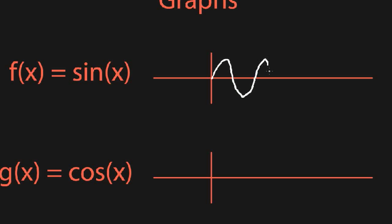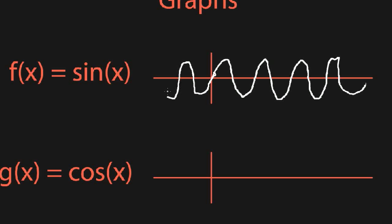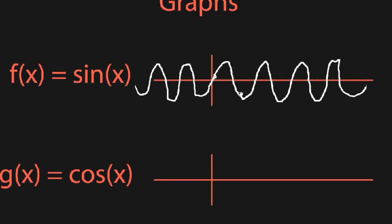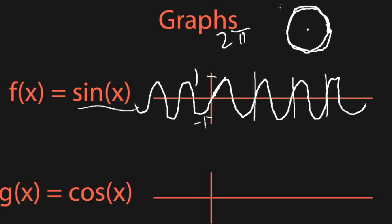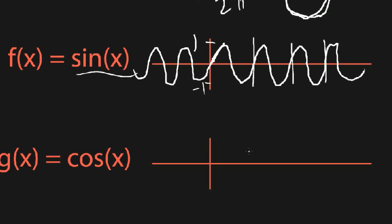Now let's look at the graphs of sine and cosine. You've probably seen these before — they make nice waves. This makes sense when you think about the sine value being the y coordinate as you travel around the circle. Starting at zero, it goes up, then back down, then back up again, and then it repeats because you're traveling around the same circle. The period is 2π — that's how long it takes to go all the way around. The graph only goes between 1 and negative 1, since on a unit circle the y coordinate can never exceed 1.